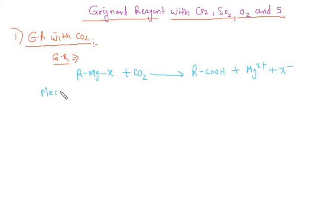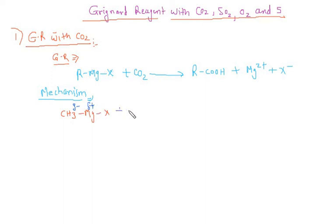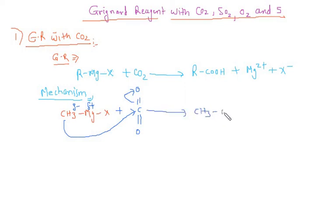Let's see the mechanism. So now in the mechanism, we will take an example CH3MgX. We know that the alkyl group is having a delta negative and magnesium is having a delta positive. This is the structure of CO2. Now this methyl group attacks the carbon, this bond shifts to the oxygen, and further we are having CH3CO- with a double bond O.